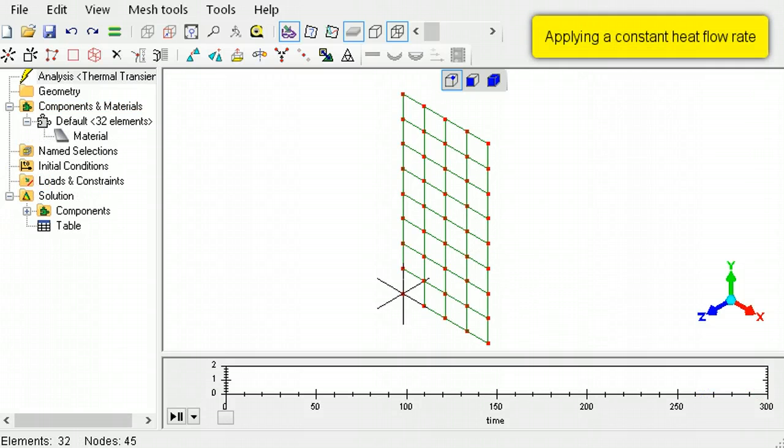To apply a heat flow rate to a section of the left edge of this transient thermal analysis model, in the select nodes mode, drag to select that portion of the left edge. Switch to the select faces mode.